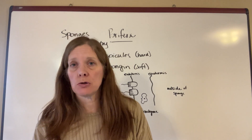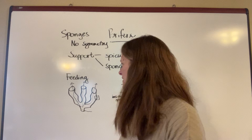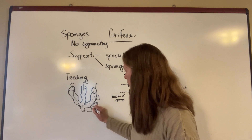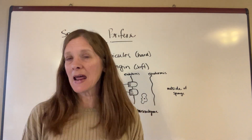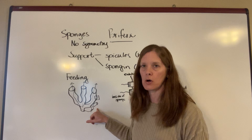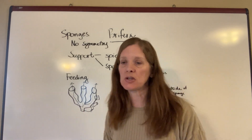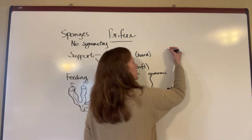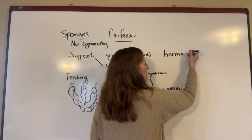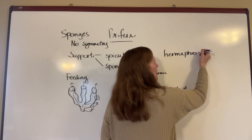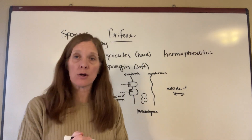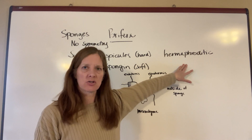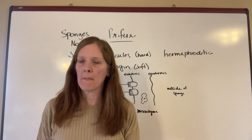Sponges reproduce both asexually by budding — they grow another little piece out to the side, which eventually separates off and becomes its own creature. Because it grew off the same animal, both are going to be genetically identical. Sponges also have the characteristic of being hermaphroditic. You actually won't see this term in your book until a little bit later, but the same term works for sponges as well as for earthworms, which is when the book introduces it.